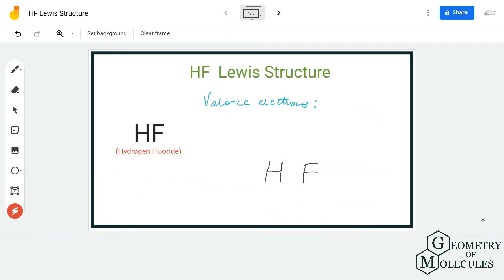Hi guys, welcome back to our channel. In today's video, we are going to help you determine the Lewis structure for HF, which is hydrofluoric acid. To determine its Lewis structure, we are first going to know the total number of valence electrons for this molecule.